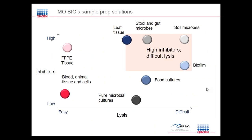At MOBIO and Kaigen, we focused on isolating microbiomes from a number of different sample types, which can be defined by their amount of inhibitors (low to high) or difficulty to lyse (easy to difficult). Blood and animal tissue typically have low inhibitors and are easier to lyse. We focus particularly on samples with high inhibitors that are also extremely difficult to lyse — including plant and leaf tissue, stool and gut microbes, soil microbes, and biofilm. Most of our kits are dedicated to isolating DNA usable for next-generation sequencing, PCR, and qPCR from these difficult sample types.